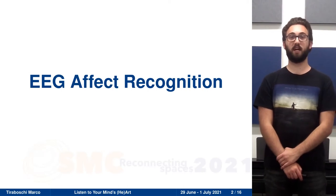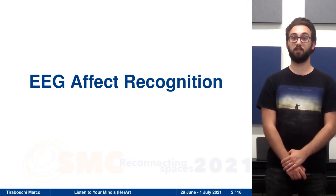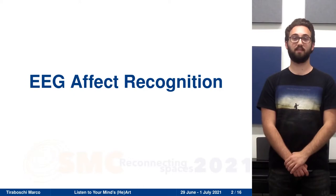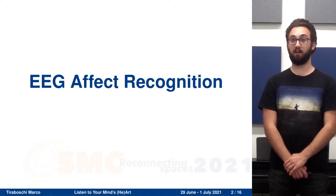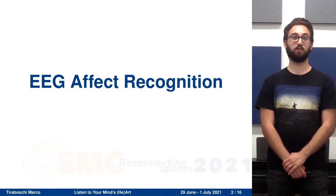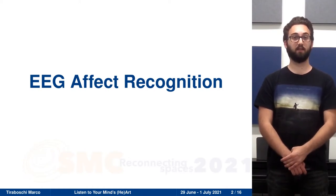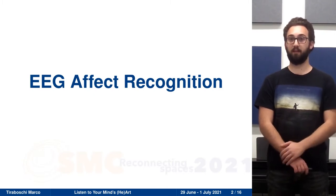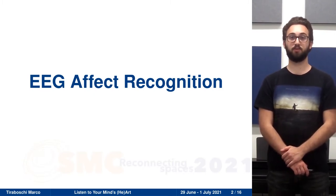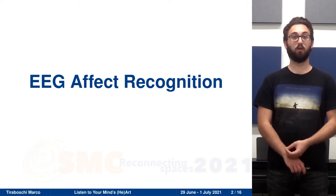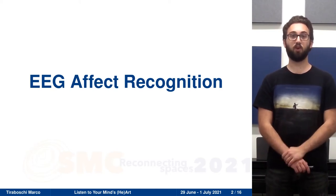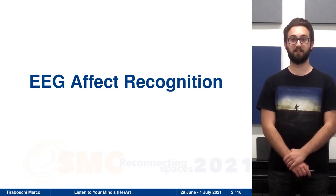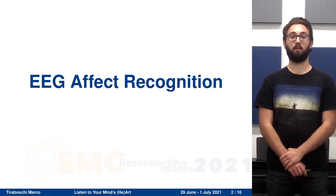The first module is the EEG Affect Recognition module. It is responsible for taking in EEG data and outputting a classification of the user's affective state. We defined the user's affective state as the combination of its valence and arousal values. Valence refers to the user's affective state as being negative or positive. Negative could be sad and positive could be happy. Arousal refers to the activation of the user's emotion. A low arousal could be calm and a high arousal could be rage. So we have a total of four different possible affective states because both are modeled as binary variables.